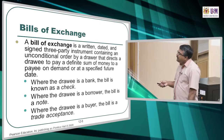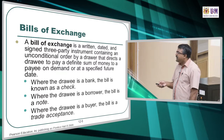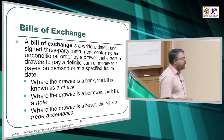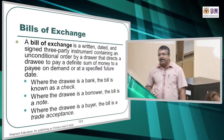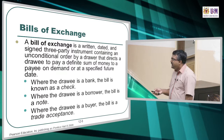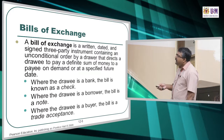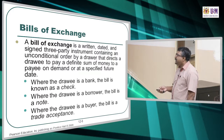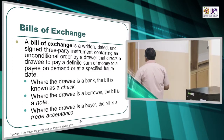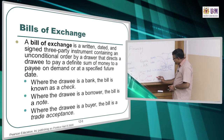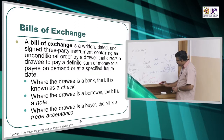In Malaysia, sometimes we spell it C-H-E-Q-U-E, sometimes C-H-E-C-K. So where the drawee is a bank, the bill is known as a check. Where the drawee is a borrower, the bill is called a note. Where the drawee is a buyer, the bill is called a trade acceptance. So that's why we have three categories: check, trade acceptance, and note.